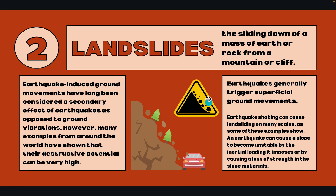Landslides basically look like this picture here. The definition is: the sliding down of a mass of earth or rock from a mountain or cliff. Earthquake-induced ground movements have long been considered a secondary effect of earthquakes as opposed to ground vibrations.